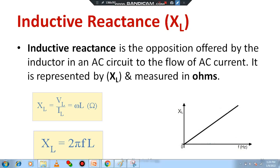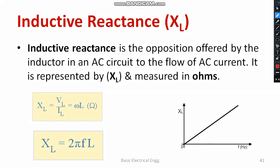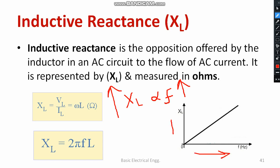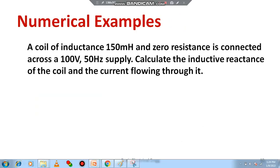Consider the equation XL = 2π × f × L. The relation between XL and supply frequency: XL is directly proportional to the supply frequency. As supply frequency increases, XL also increases — you get a straight line graph. XL and supply frequency are both directly proportional.